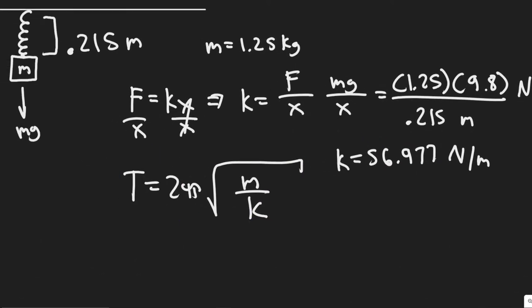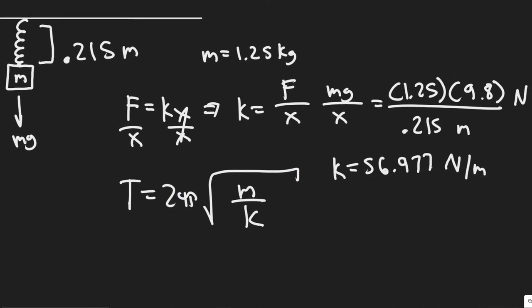And the way we're going to solve for this is by using this formula here for the period of something traveling in a simple harmonic motion like this. We know the spring is going to travel that way. So the formula for the period is 2π over the square root of the mass divided by the spring constant k.